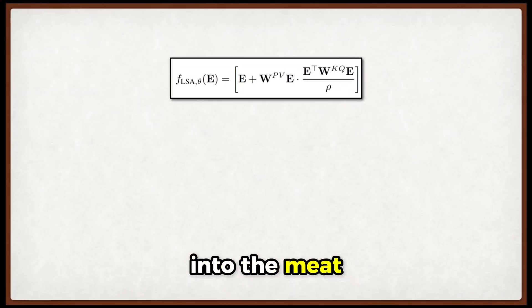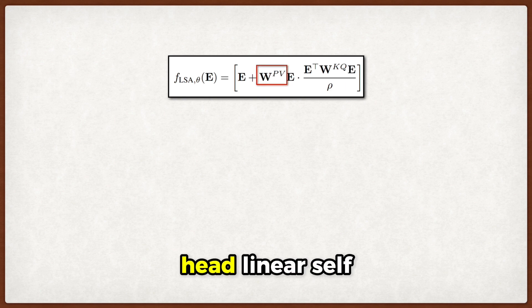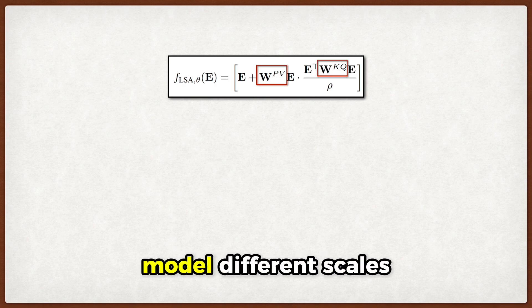Now, let's get into the meat of the paper. They analyze two theoretical settings to understand what's happening, and the first one is linear regression with a single-head linear self-attention network where they add a rank constraint on the attention weight matrices to model different scales.